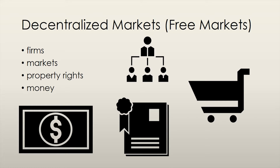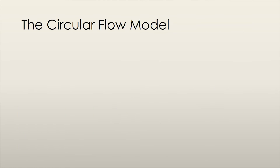Money is a commodity or a token that is uniformly accepted as a method of payment. The circular flow model is a highly simplified model of the free market economy, but illustrates the basic idea of how the economy works. In this model, we are going to assume that there is no government and that there is no international trade either.